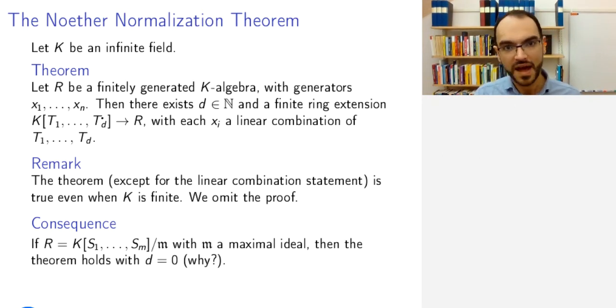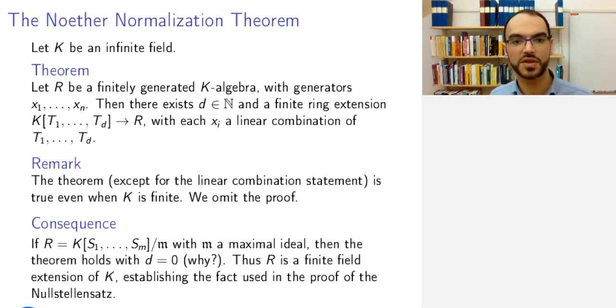So in fact, this knowledge, together with the theorem, says that I have a finite field extension from K to my field R, which is exactly what I need. And this closes the gap in the proof of Hilbert's Nullstellensatz.